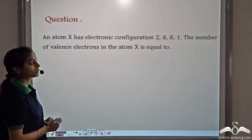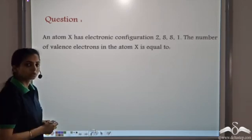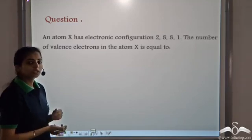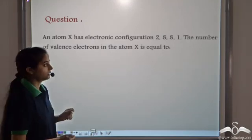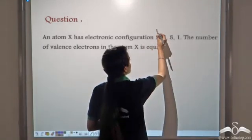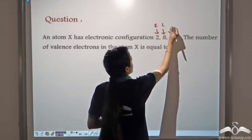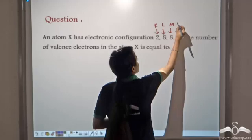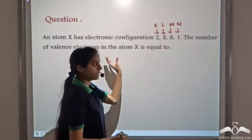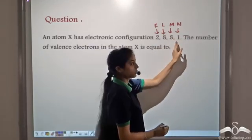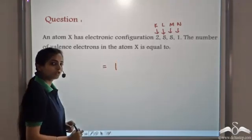An atom X has electronic configuration 2, 8, 8, 1. The number of valence electrons in atom X is equal to: we know that valence electrons are the number of electrons present in the outermost shell or the valence shell. This configuration means two electrons in the K shell, 8 in the L shell, again 8 in the M shell and 1 in the N shell. So the N shell is the outermost shell of atom X, which has one electron. Therefore the number of valence electrons in atom X is equal to 1.